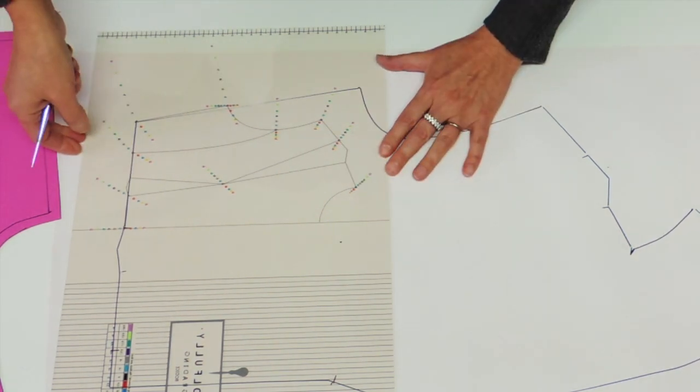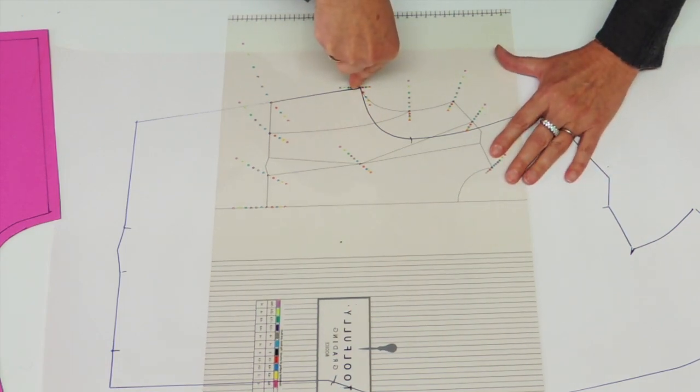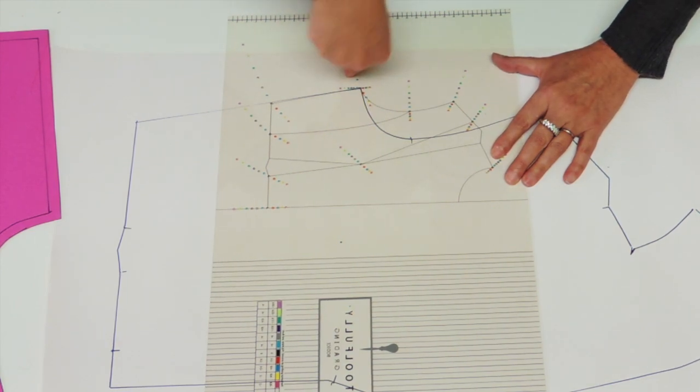I continue now with the underarm point, right on, parallel. You could easily pivot and point out the size that you need.